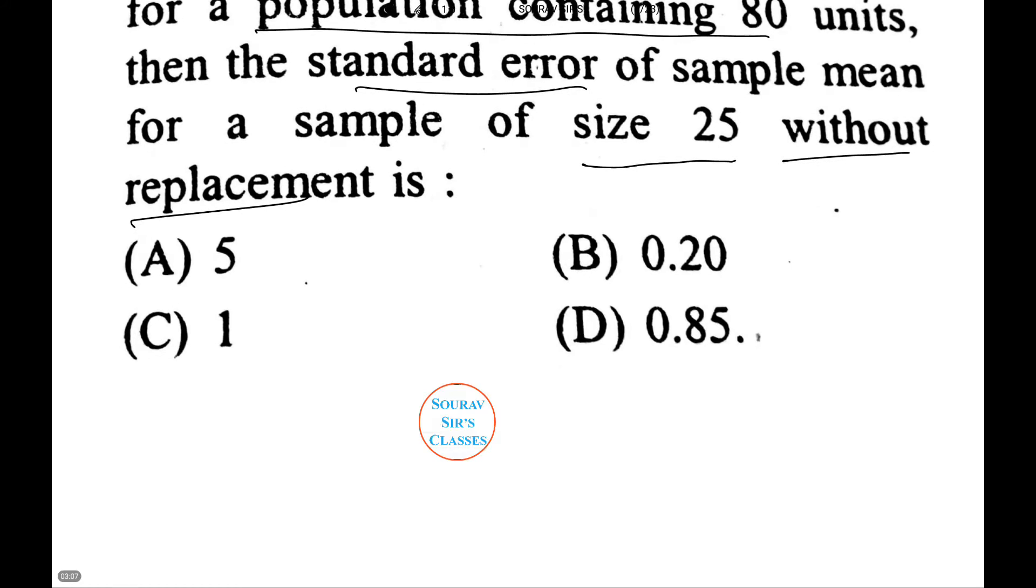Now again, let's write the given information. σ = 5, the population size N = 80, the sample size n = 25.